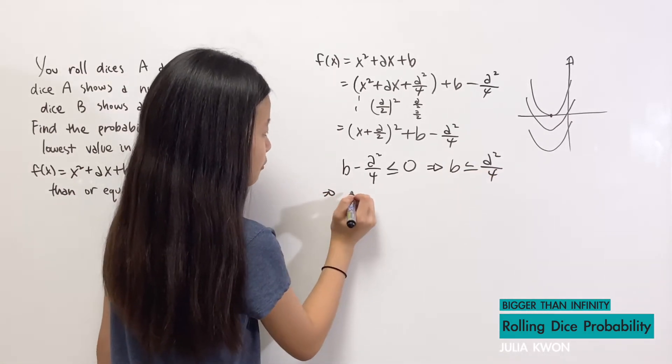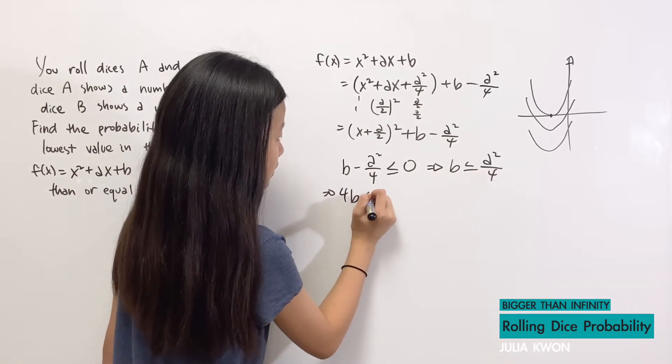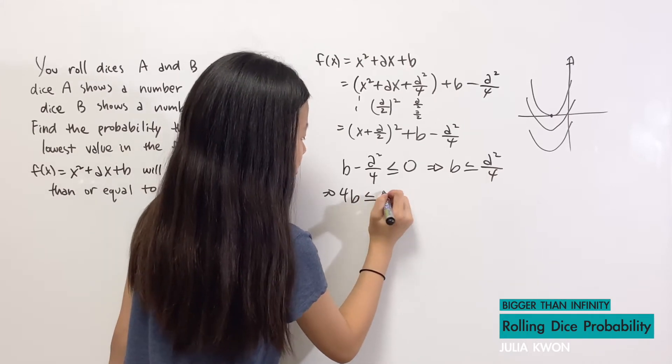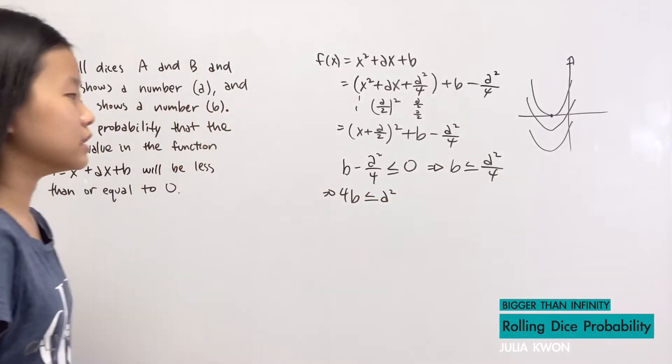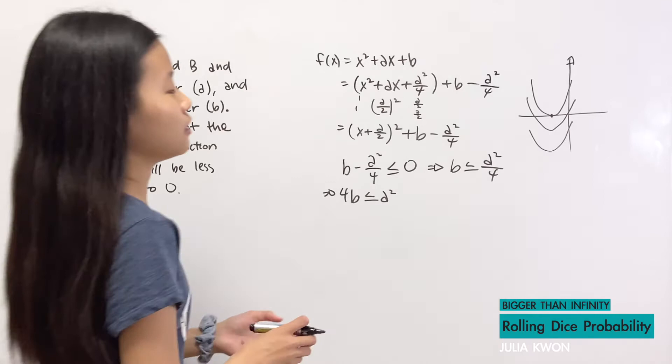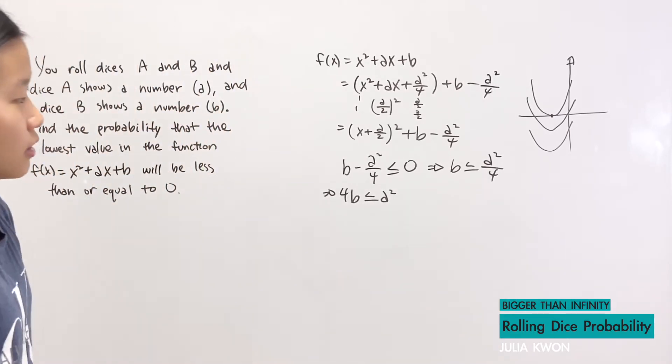And if we multiply 4 on both sides, that will give us 4b is less than or equal to a². And now we're going to find the probability for this question.